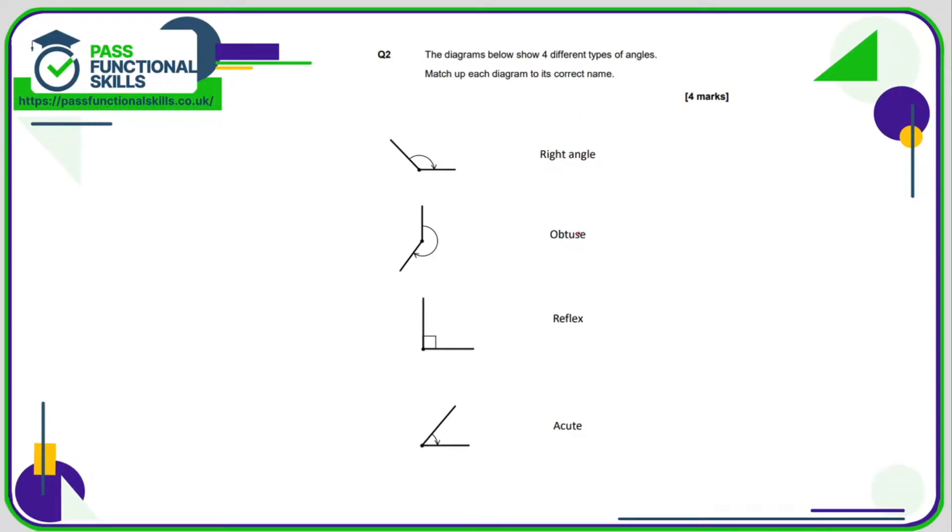Here we've got a right angle, obtuse, reflex and acute. An acute angle is an angle which is less than 90 degrees. So this angle here is less than 90 degrees because this is what 90 degrees looks like. A right angle is 90 degrees and is always shown with this little square symbol. An angle which is greater than 90 degrees but less than 180 degrees is an obtuse angle and an angle which is greater than 180 degrees is a reflex angle.